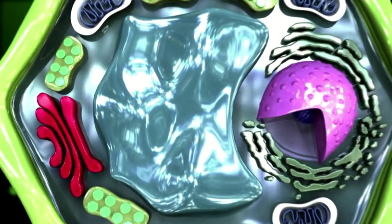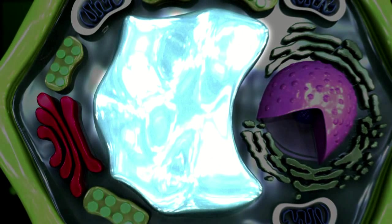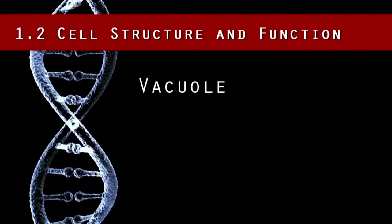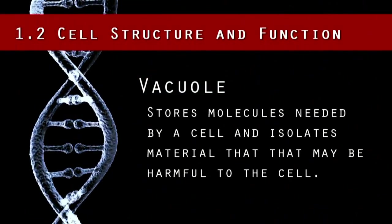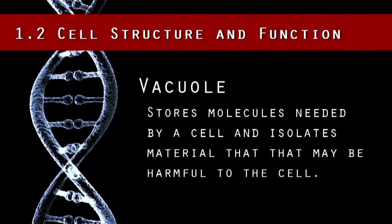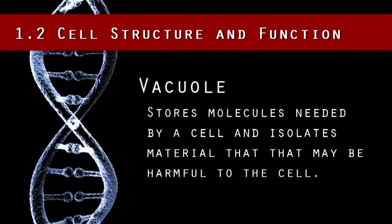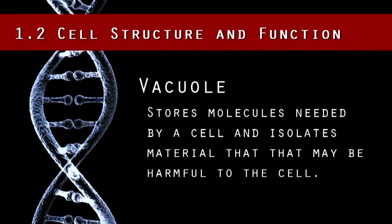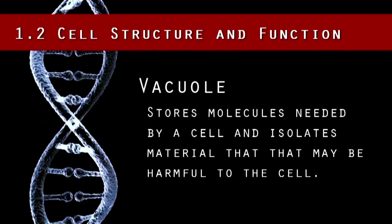Secondly, there is often just one large central vacuole found in plant cells, whereas animal cells have a few small ones. The vacuole stores molecules needed by a cell and also isolates material that may be harmful to the cell.